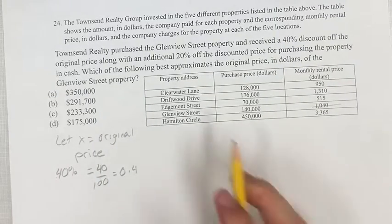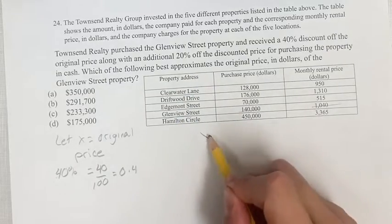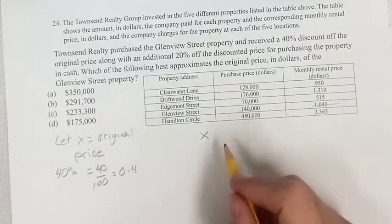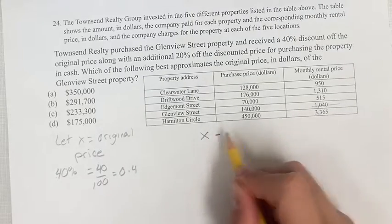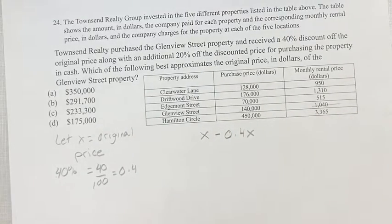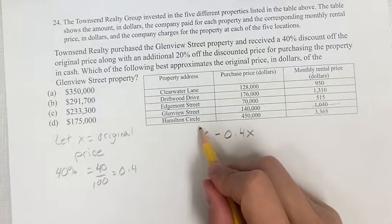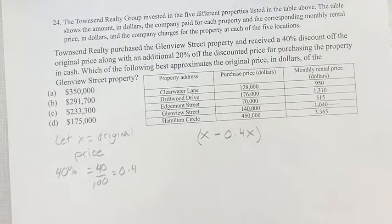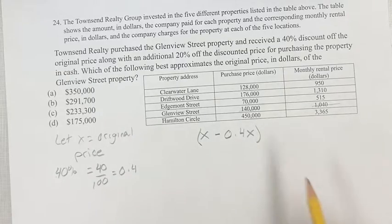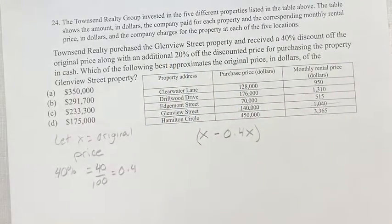So we know that they purchased the Glendrew Street property for x, the original price, and received a 40% discount, so they got to reduce it by 0.4x. We have this as our original discount, and then they get 20% off that for purchasing the property in cash.